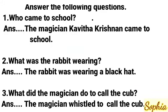Question number one: Who came to school? Answer: The magician Kavita Krishnan came to school. Question number two: What was the rabbit wearing? Answer: The rabbit was wearing a black hat. Question number three: What did the magician do to call the cup? Answer: The magician whistled to call the cup.